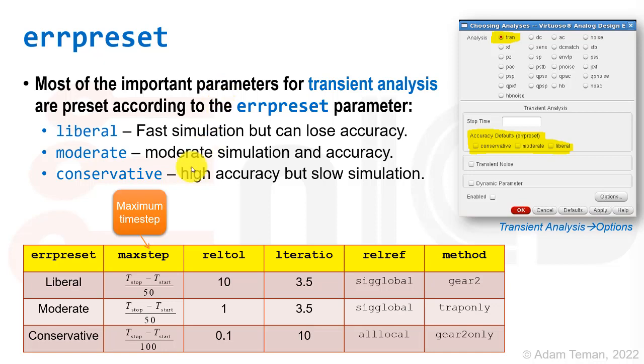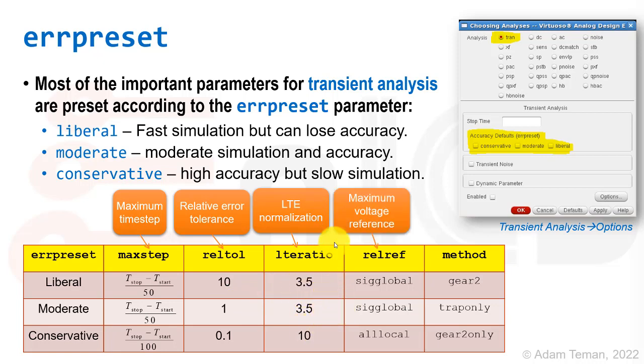What error preset does, it gives a preset for these parameters: max step, RELTOL, LTE ratio, RELREF, and method. For the maximum time step, the conservative has a much smaller maximum time step than liberal or moderate. For the relative tolerance, the conservative has a smaller relative tolerance than liberal and moderate. That really can trade off the speed versus accuracy. LTE normalization gets smaller for liberal and moderate than conservative. RELREF is the maximum voltage if it's going to be global or local. And the integration method if it's using gear 2 or trapezoidal or others.